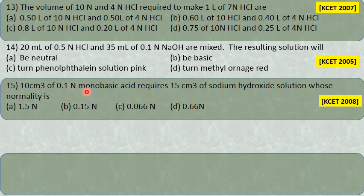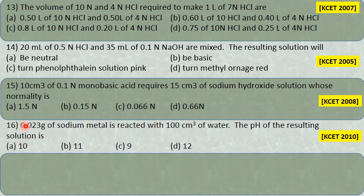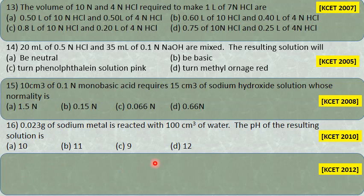More practice: (3) 10 cm³ of 0.1 normal monobasic acid requires 15 cm³ of NaOH—find the normality using N1V1 = N2V2. (4) 0.023 grams of sodium metal reacted with 100 cm³ of water—sodium reacts to give NaOH solution; find NaOH concentration, calculate pOH, then pH. (5) Which addition will not alter the pH of 20 mL of 0.1 normal acid? Find the answers for yourself.